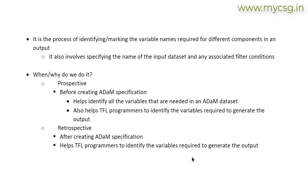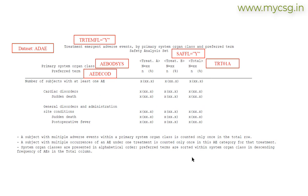Both approaches can be taken and companies choose either based on their convenience. Now we will see an example of an annotated table shell and an annotated listing shell. This table is about treatment emergent adverse events by primary system organ class and preferred term, generated using the safety analysis set, presenting primary system organ class and preferred term in the first column, summarized within treatment A, treatment B, and a total column.